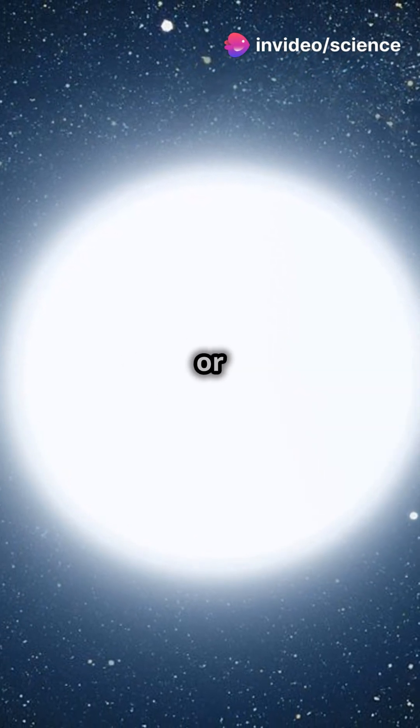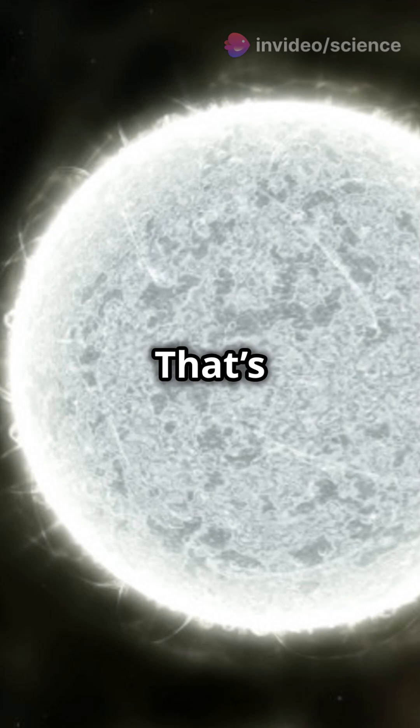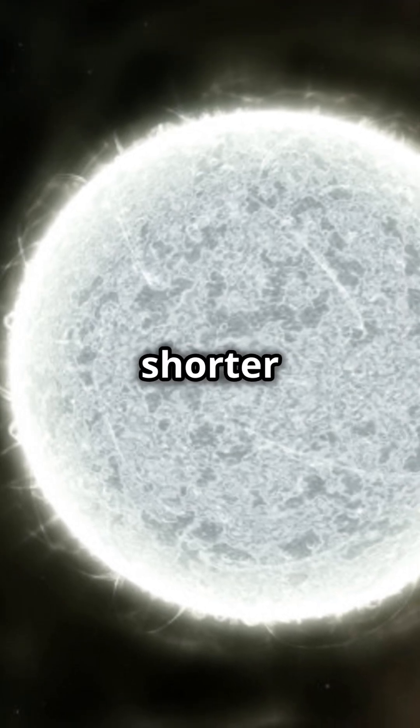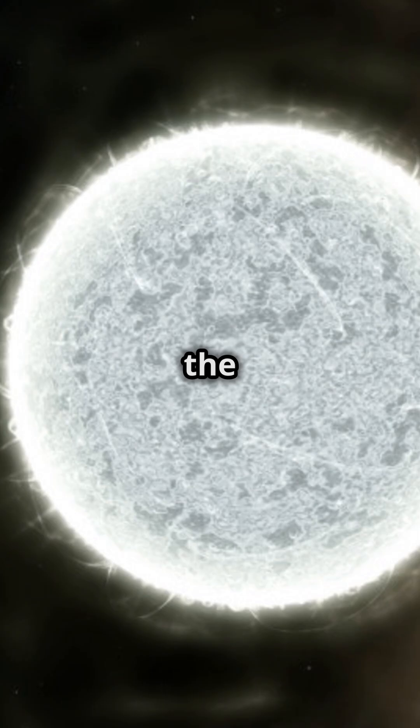The reason we often see it as yellow or orange? That's due to Earth's atmosphere scattering shorter blue wavelengths, especially when the sun is low in the sky.